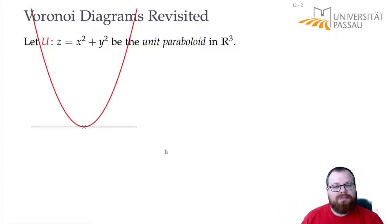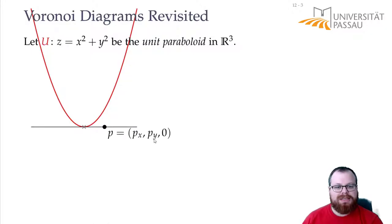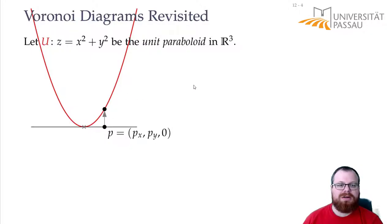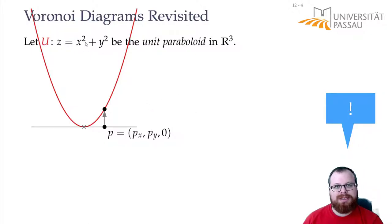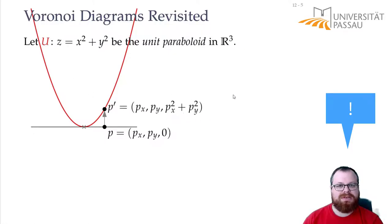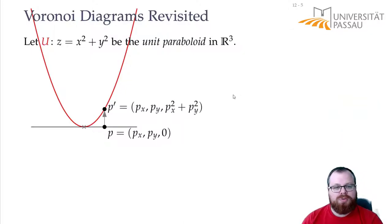So we have a point set in the plane. That means every point P has some x coordinate, some y coordinate, and the z coordinate is zero. Now we want to project those points onto the unit paraboloid by going straight up. We end up with the same x and y coordinate, and the z coordinate we get from the formula of the unit paraboloid — so we have Px squared plus Py squared. That we can do for all our points in the plane.